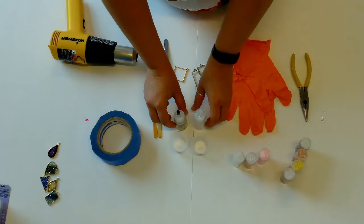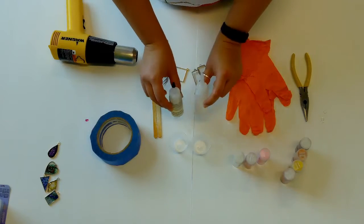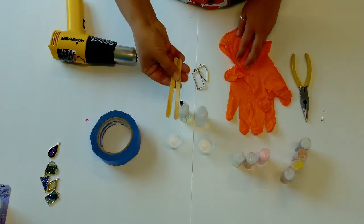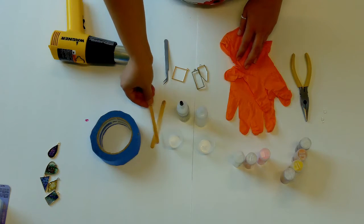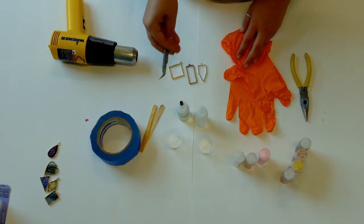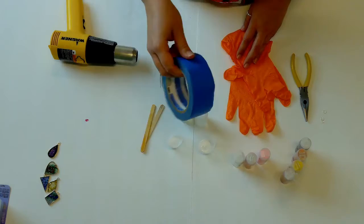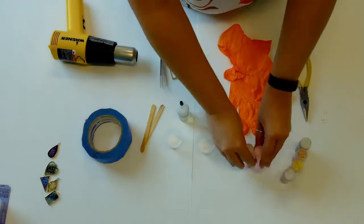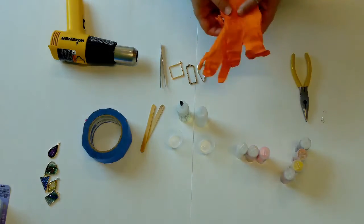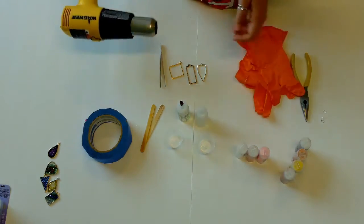Supplies include a resin kit that includes the resin, hardener, measuring cups, and stir sticks, frame pendants, tweezers, masking tape, glitter, gloves, and a heat gun.